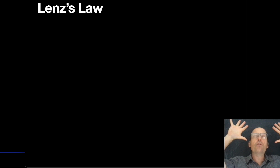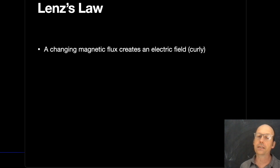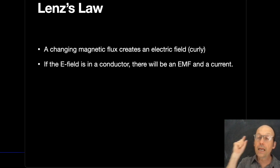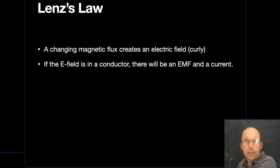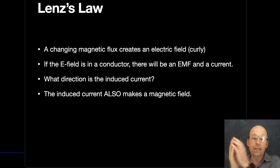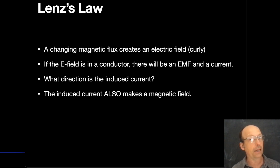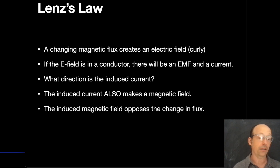Now we're ready for Lenz's Law. A changing magnetic flux creates an electric field. If that curly electric field exists in a conductor, the free charges move and you get a current. Lenz's Law is all about the direction of that induced current. It says the induced current will also make a magnetic field, and that magnetic field will be in the direction to oppose the change in flux.